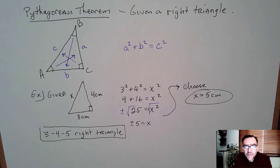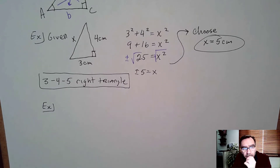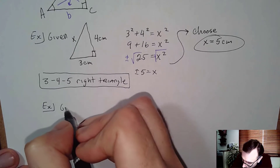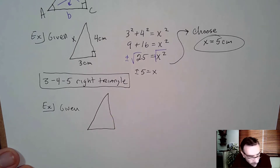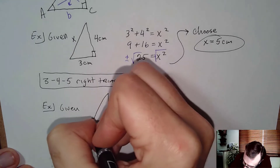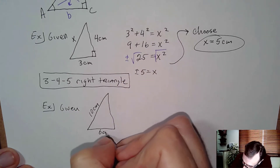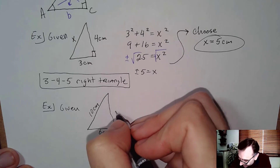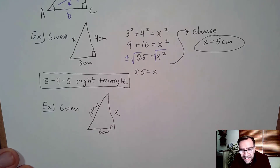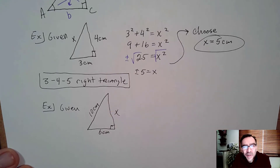Let's do another one. This time let's be given the hypotenuse and find one of the legs. The hypotenuse is 10 centimeters and the base is 6 centimeters. It's a right triangle — sorry about my drawing — and we want to find this leg x.